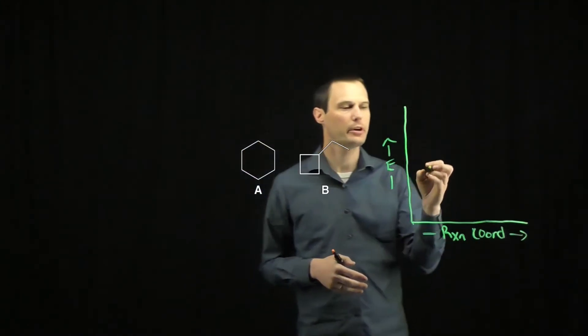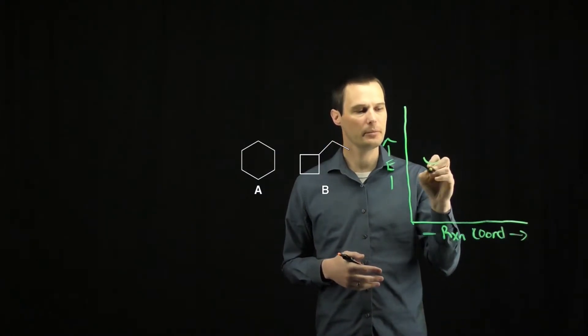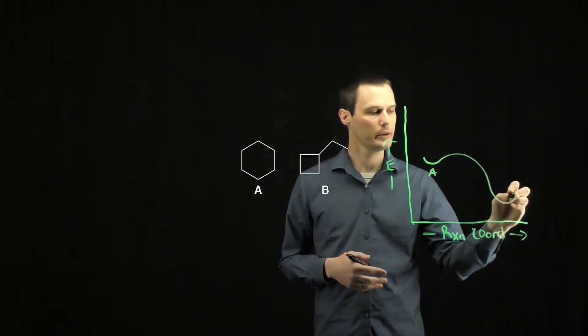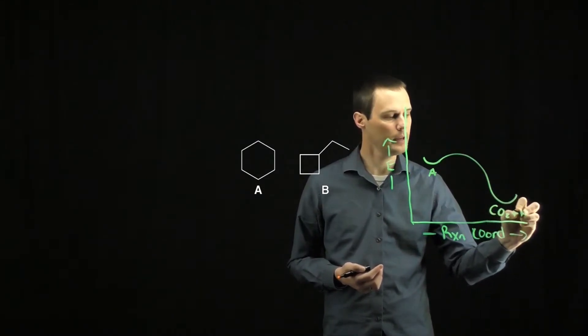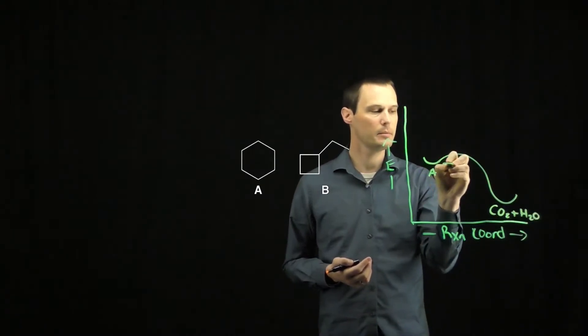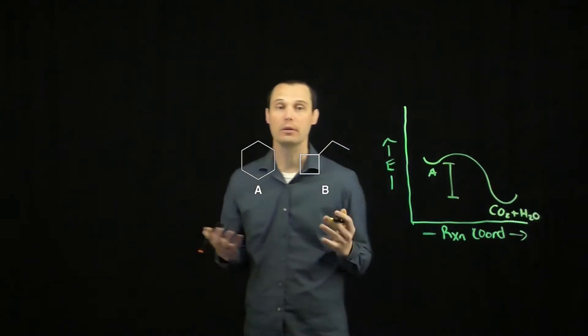If we look at A, we start with some starting material energy going to carbon dioxide and water. We're combusting it, so it's going to have carbon dioxide and water as the products. We get some delta H for the combustion of A.